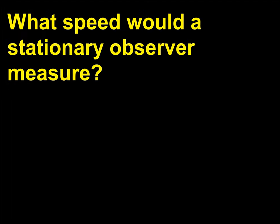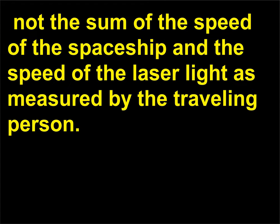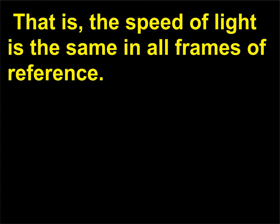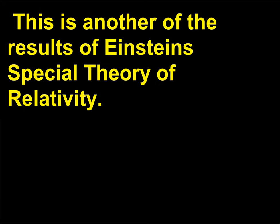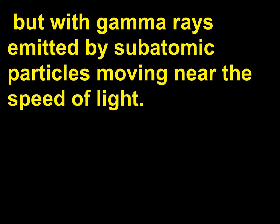What speed would a stationary observer measure? Surprisingly, she would find that the light was traveling at the speed of light — not the sum of the speed of the spaceship and the speed of the laser light as measured by the traveling person. That is, the speed of light is the same in all frames of reference. This is another result of Einstein's special theory of relativity. It has been tested not with spaceships, but with gamma rays emitted by subatomic particles moving near the speed of light.